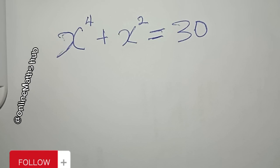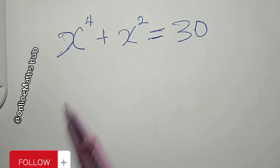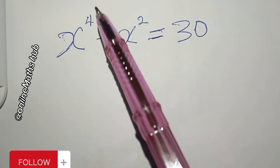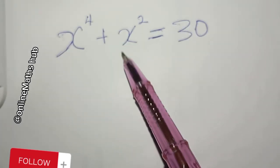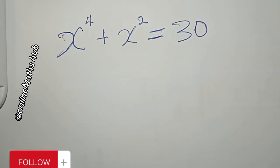Hello friends, welcome back to Online Math Hub. We have this problem to solve: x to the power 4 plus x to the power 2 is equal to 30.